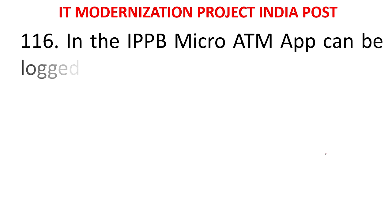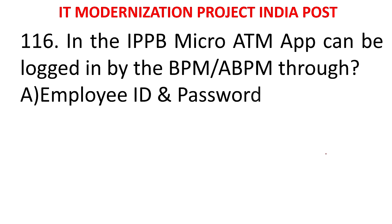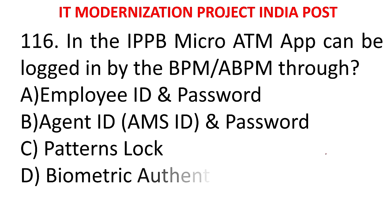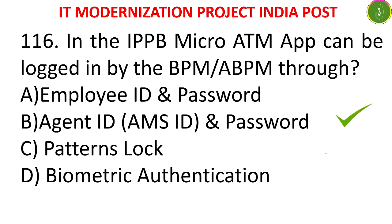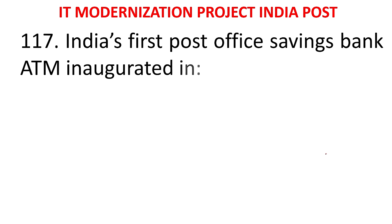MCQ 111: In the IPPB Micro ATM app, login can be done by the BPM or ABPM through - A) Employee ID and password, B) Agent ID and AMS ID and password, C) Pattern lock, D) Biometric authentication. The answer is Agent ID and password. MCQ 112: India's first post office savings bank ATM is inaugurated in - Hyderabad, Chennai, New Delhi, or Mumbai. The answer is Chennai.